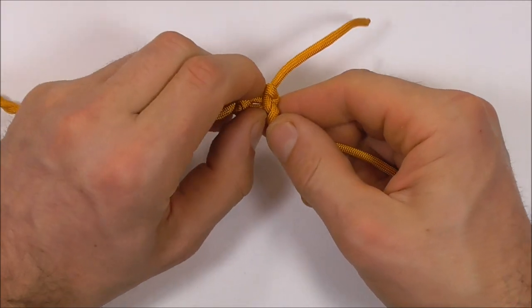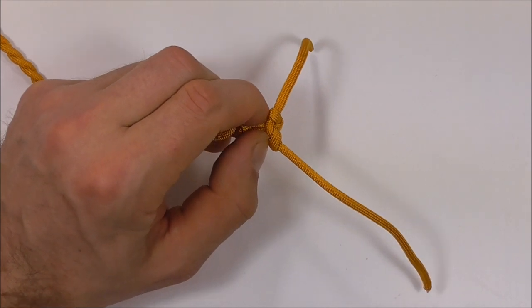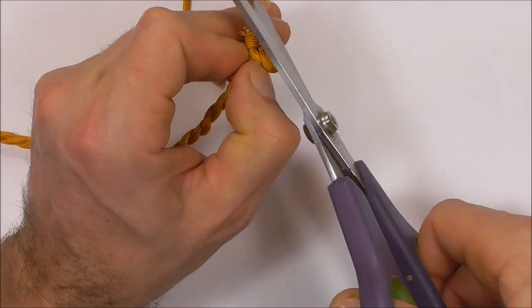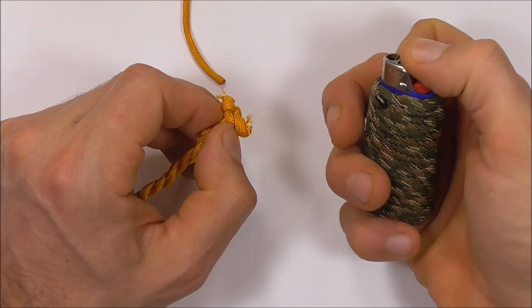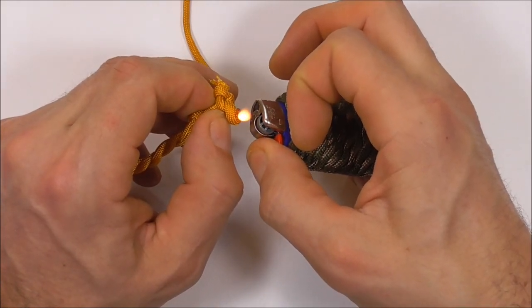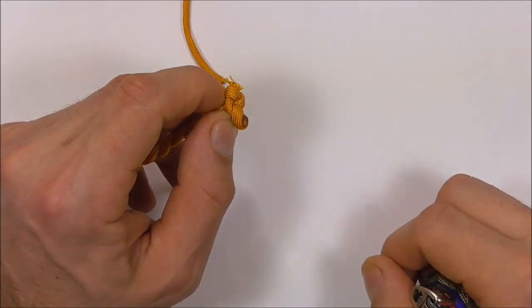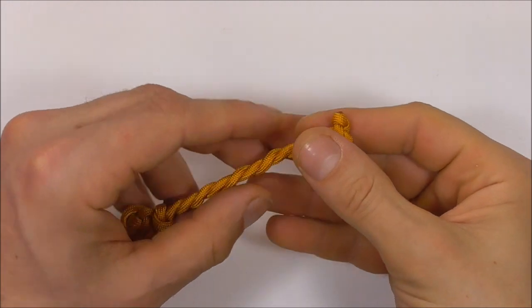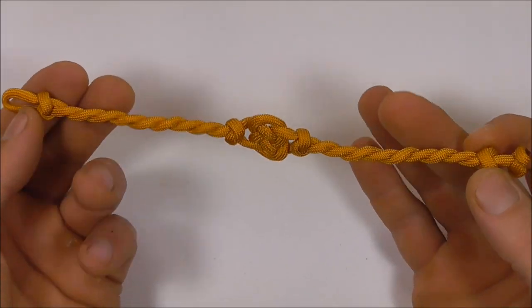Then we can cut and singe these excess pieces. With a pair of scissors just cut them off, grab a lighter and then singe the ends. Repeat that for this side. I've gone ahead and cleaned up the button and here you are is your finished double coin knot bracelet.